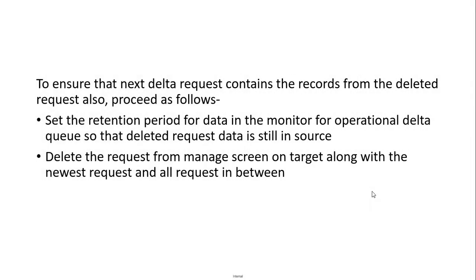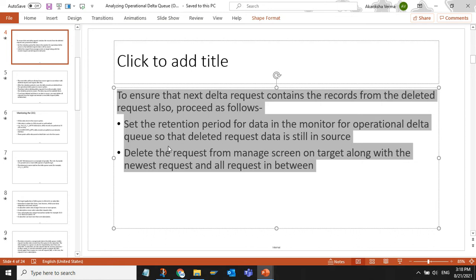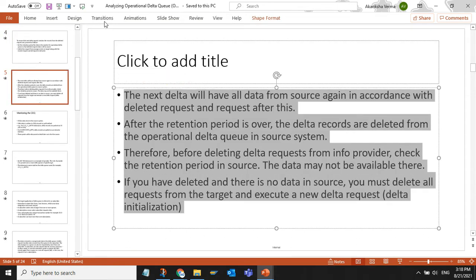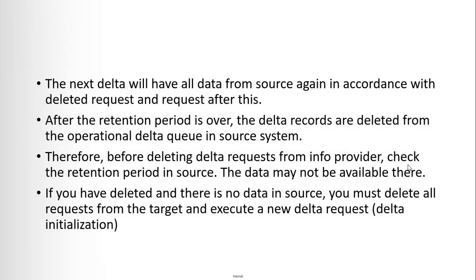To ensure that the next delta request contains the records from the deleted request also, proceed as follows. Set the retention period for data in the monitor for the operational delta queue so that deleted request data is still in the source. Delete the request from the manage screen on the target along with the newest request and all requests in between. The next delta will have all data from the source again in accordance with the deleted request and requests after this. After the retention period is over, the delta records are deleted from the operational delta queue in the source system.